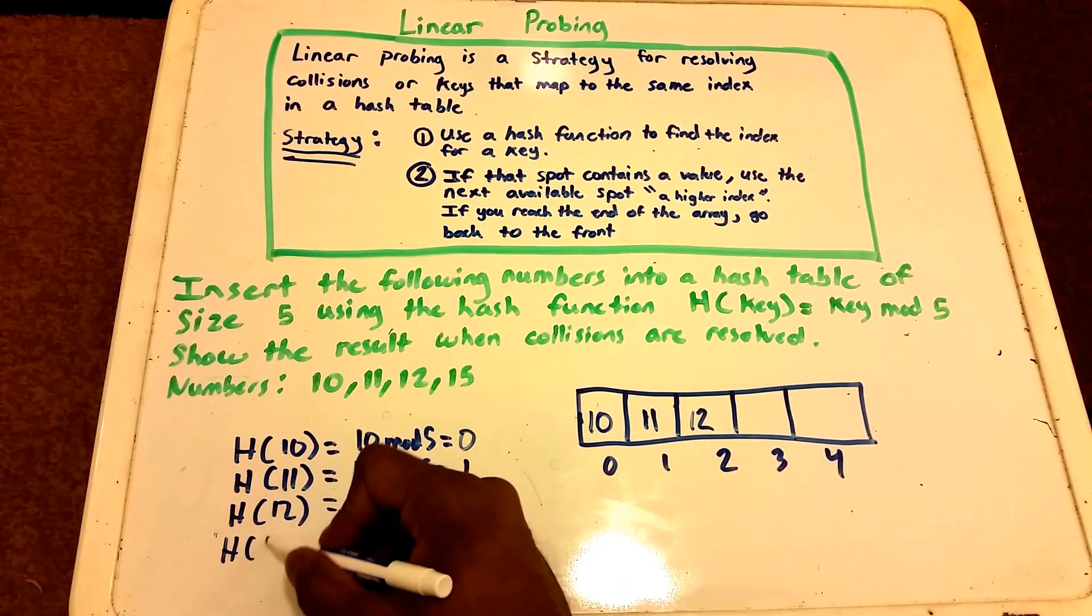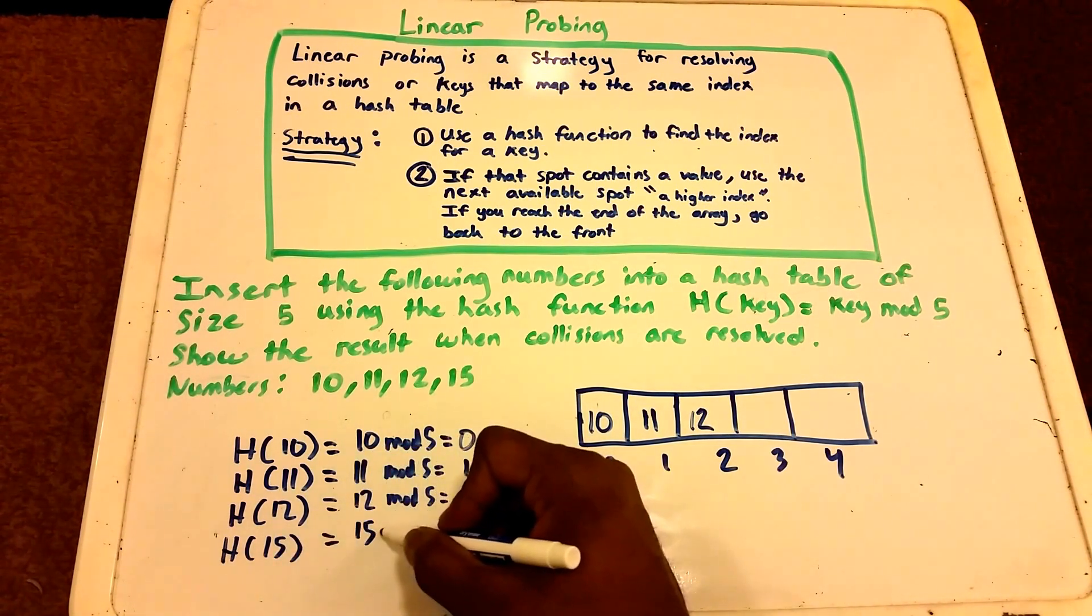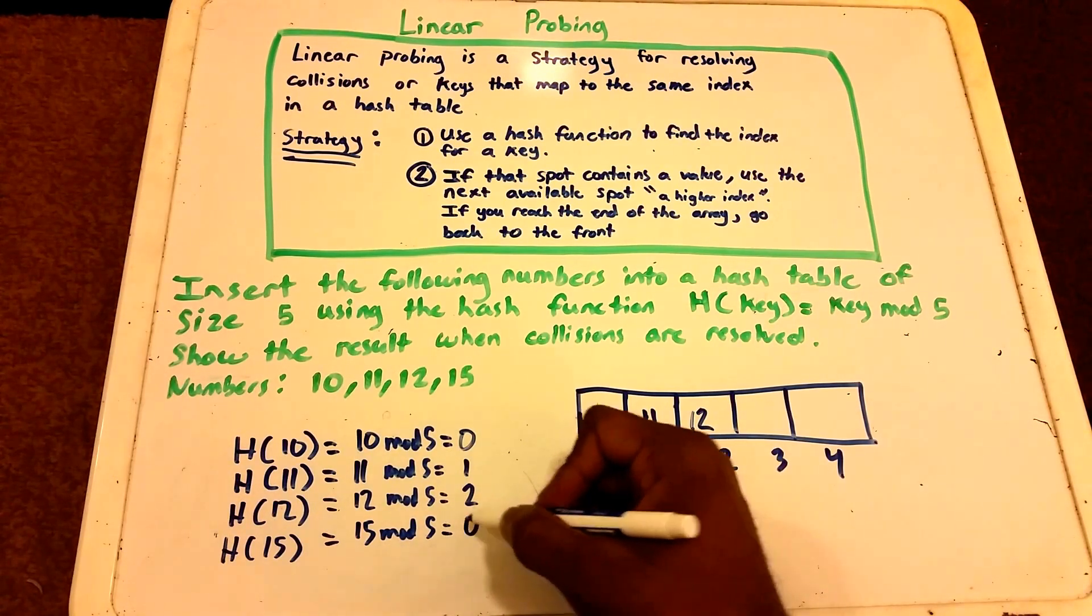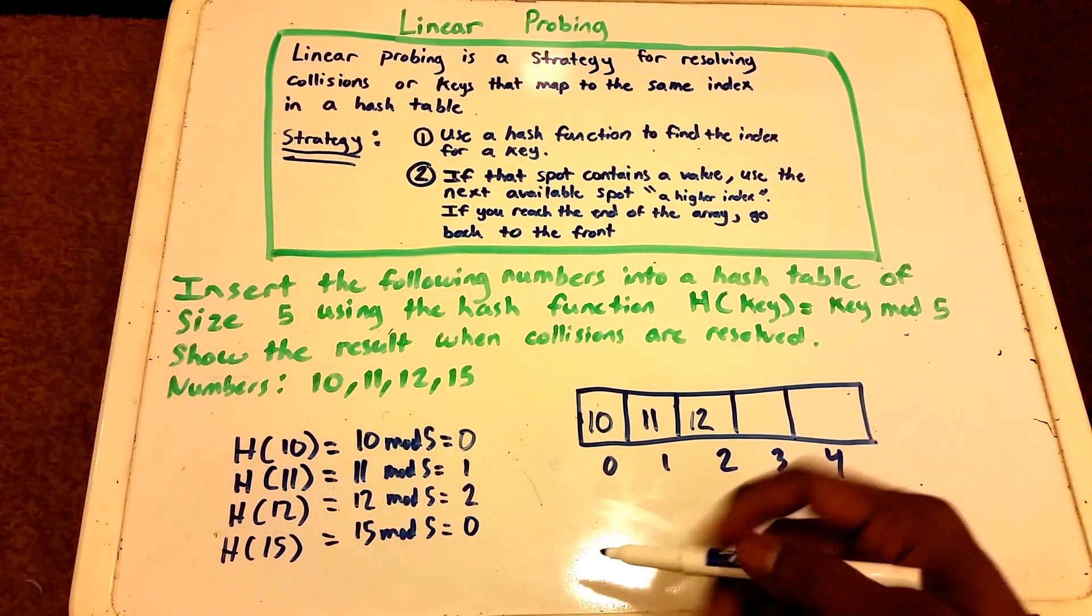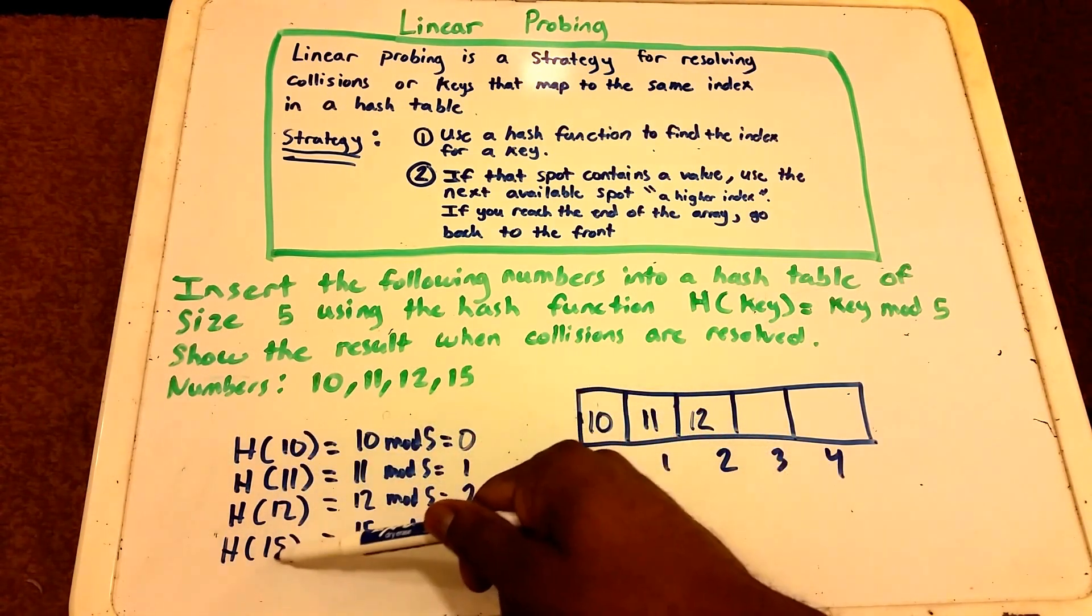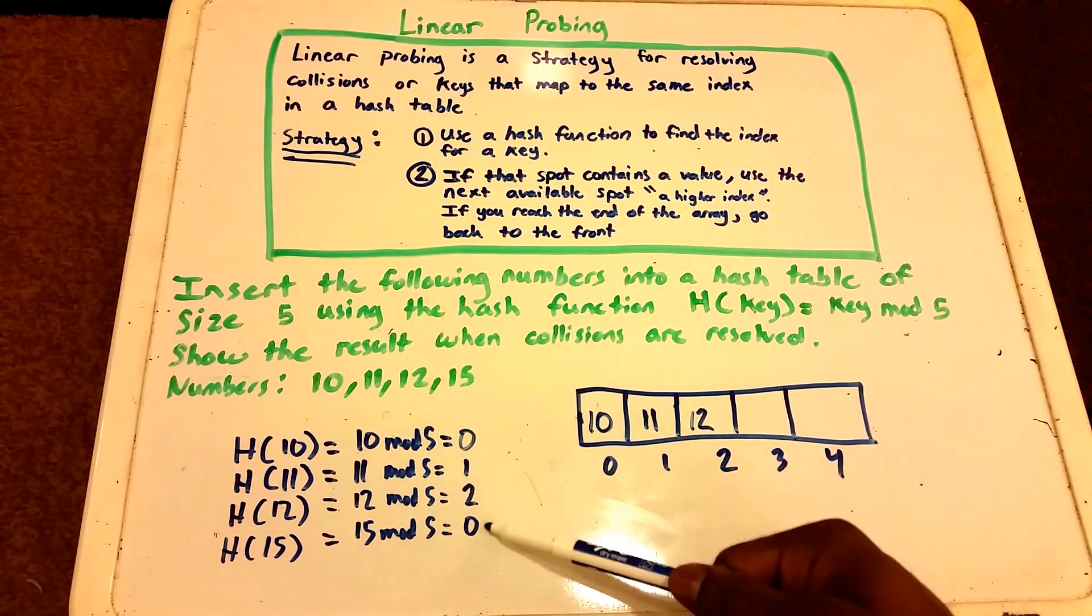Next up we input our key value 15. This gives us 15 mod 5 which is 0. Now we have a collision. We see that we have two keys, 10 and 15, that map to the same index which is 0.